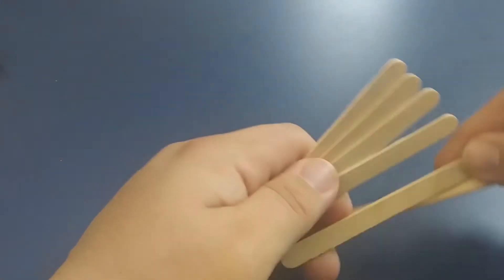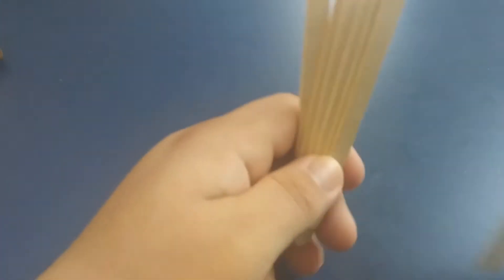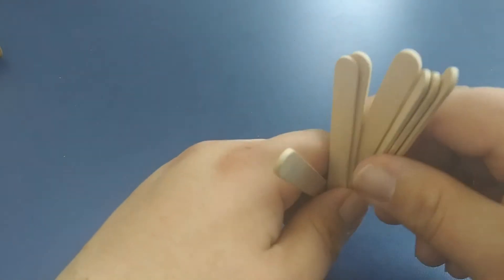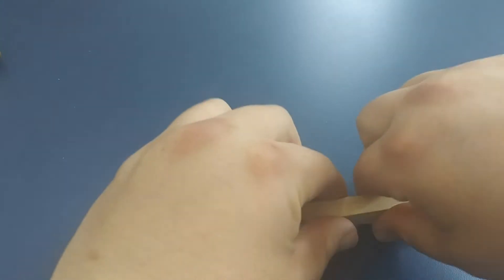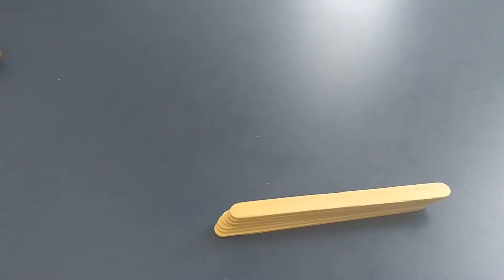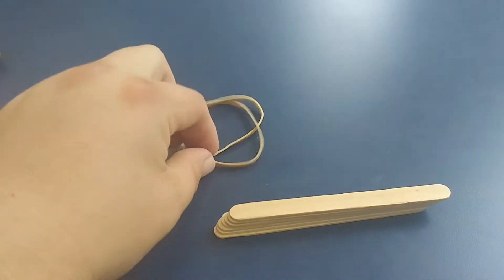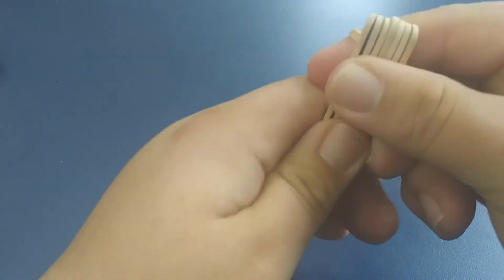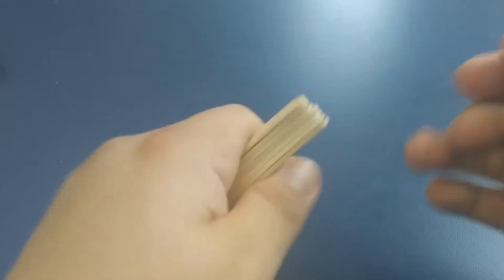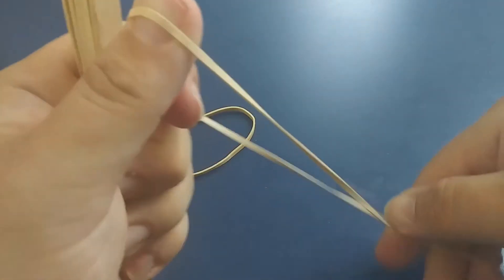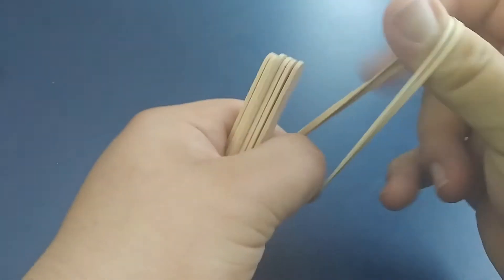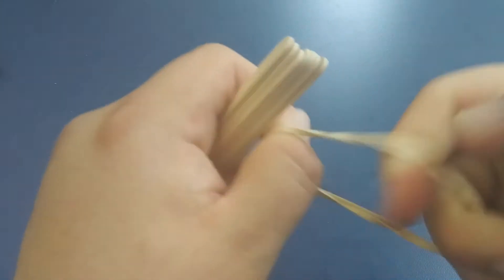We're going to grab about seven popsicle sticks for our arm. Stack them up just like that. Then we're going to grab two rubber bands, use one at a time, and tie down each side. I'll show you two different methods. The first one I like to do is double over your rubber bands just like this.